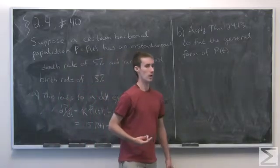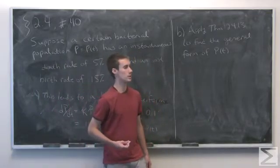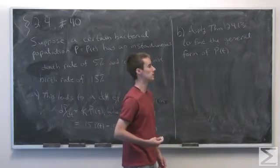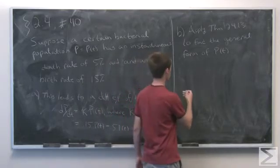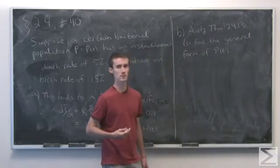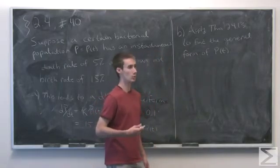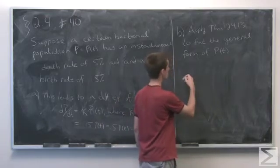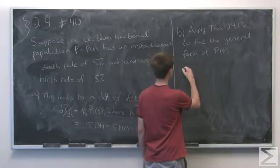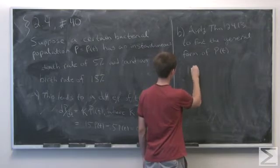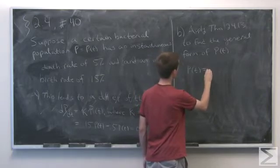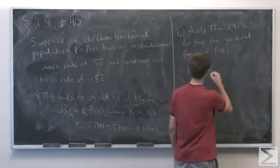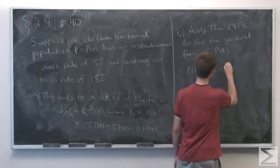Part B asks us to apply theorem 2.4.13 to find the general form for function p(t). This says that whenever we have a function whose instantaneous rate of change is proportional to the function, where k is the constant of proportionality, we have that p(t) equals c, where c is some constant, times e to the kt.